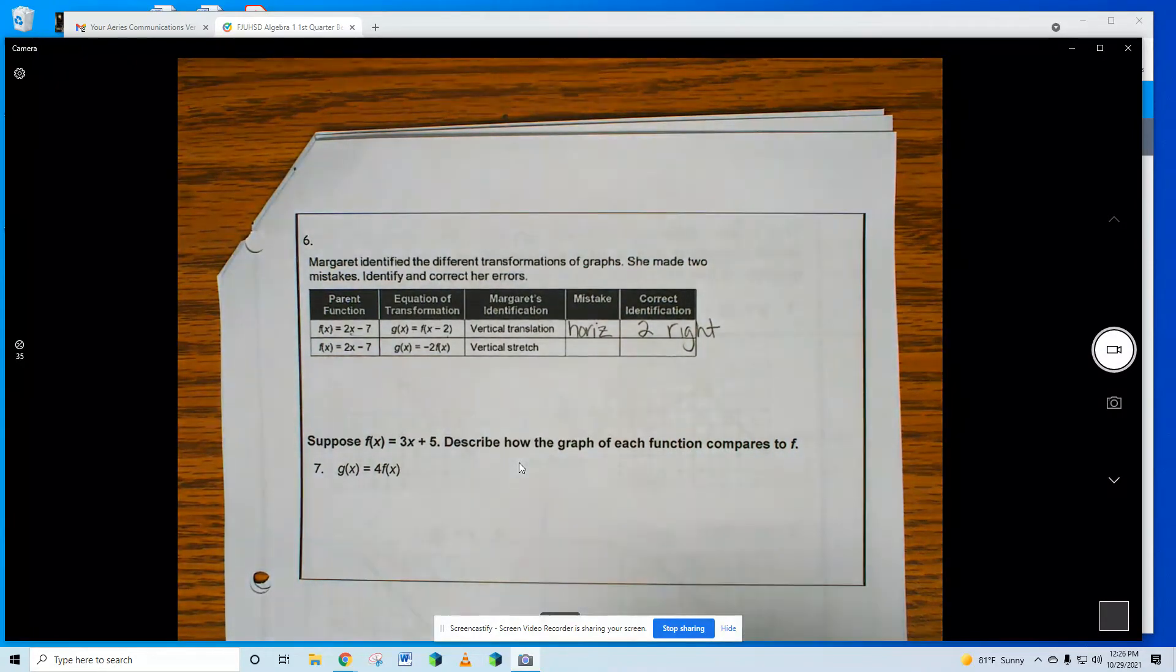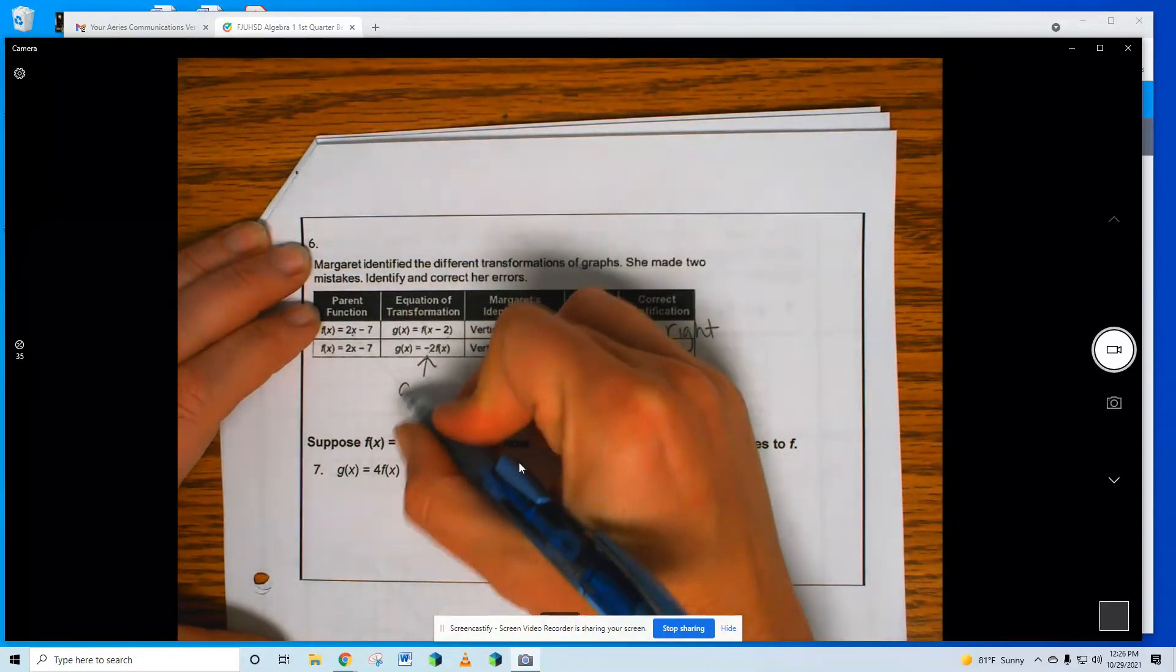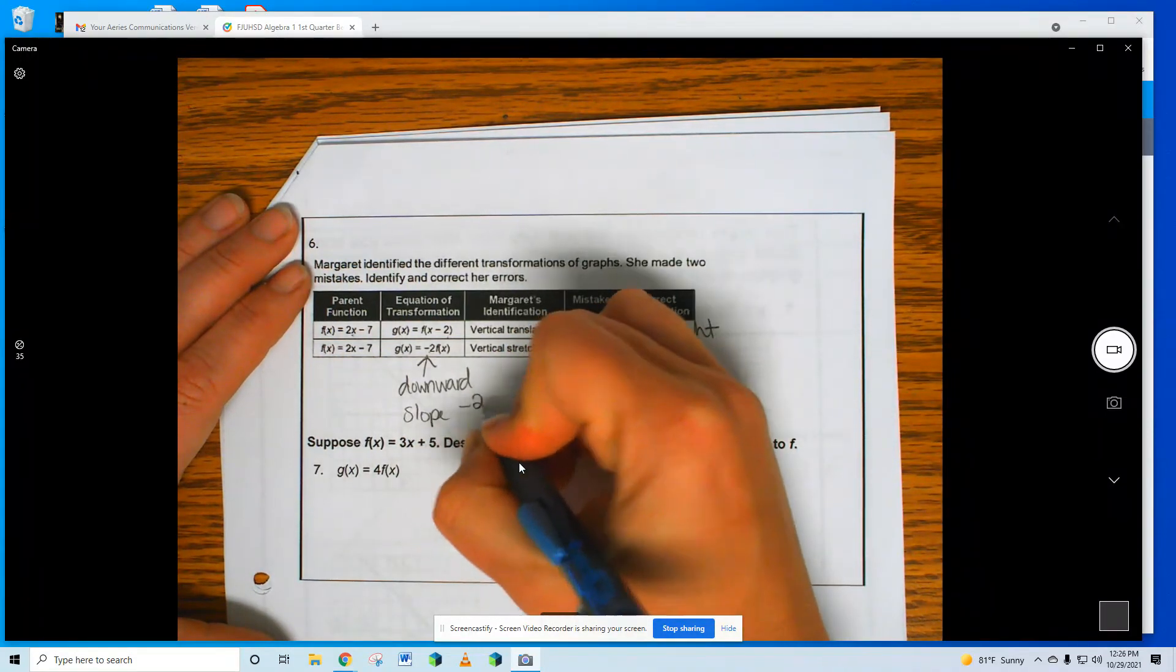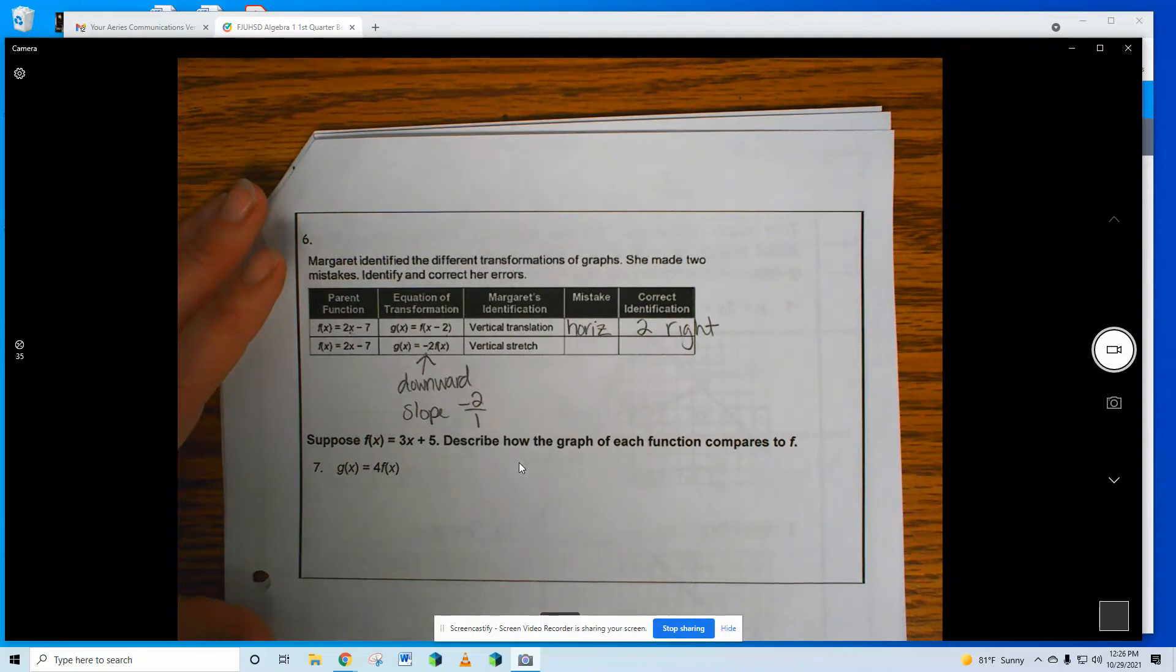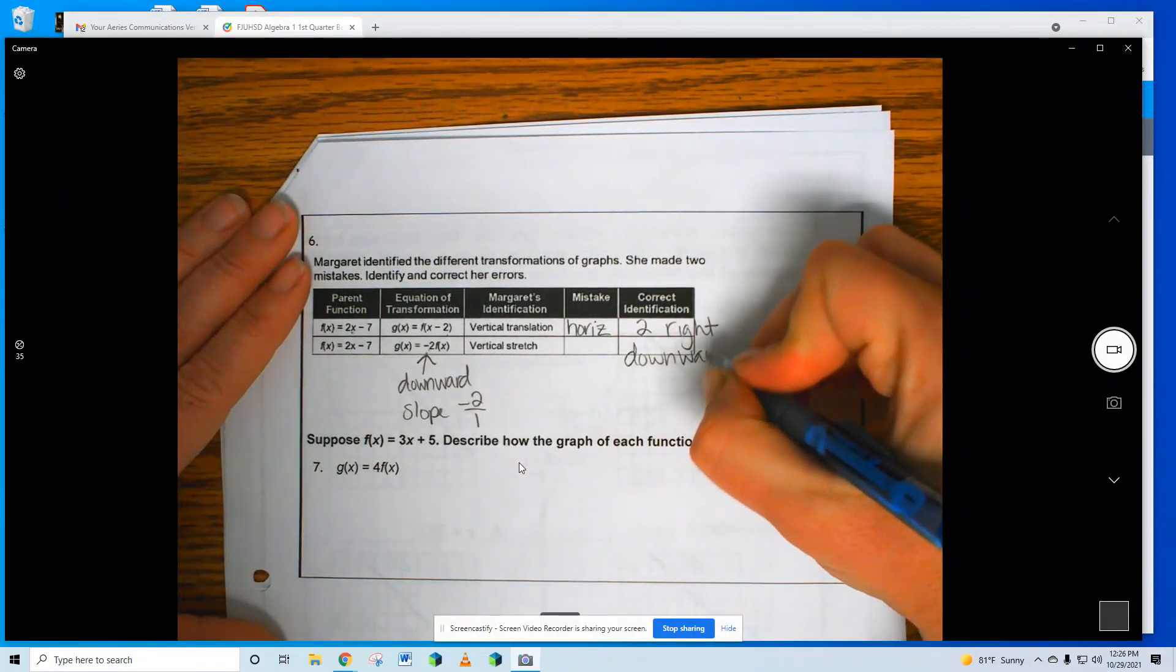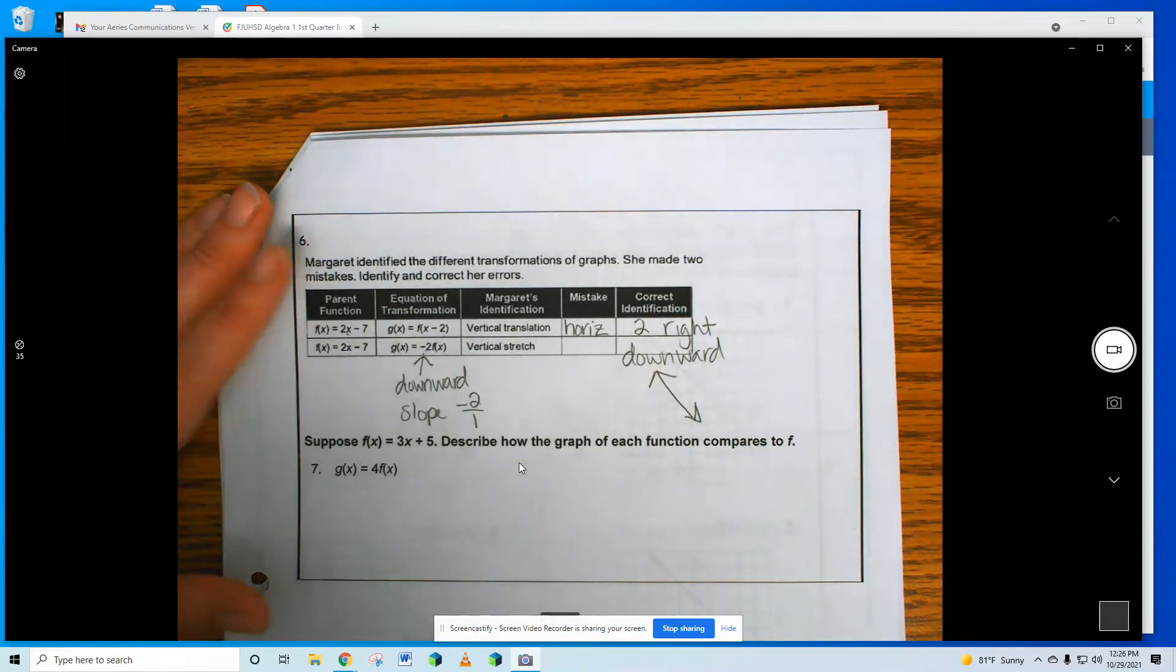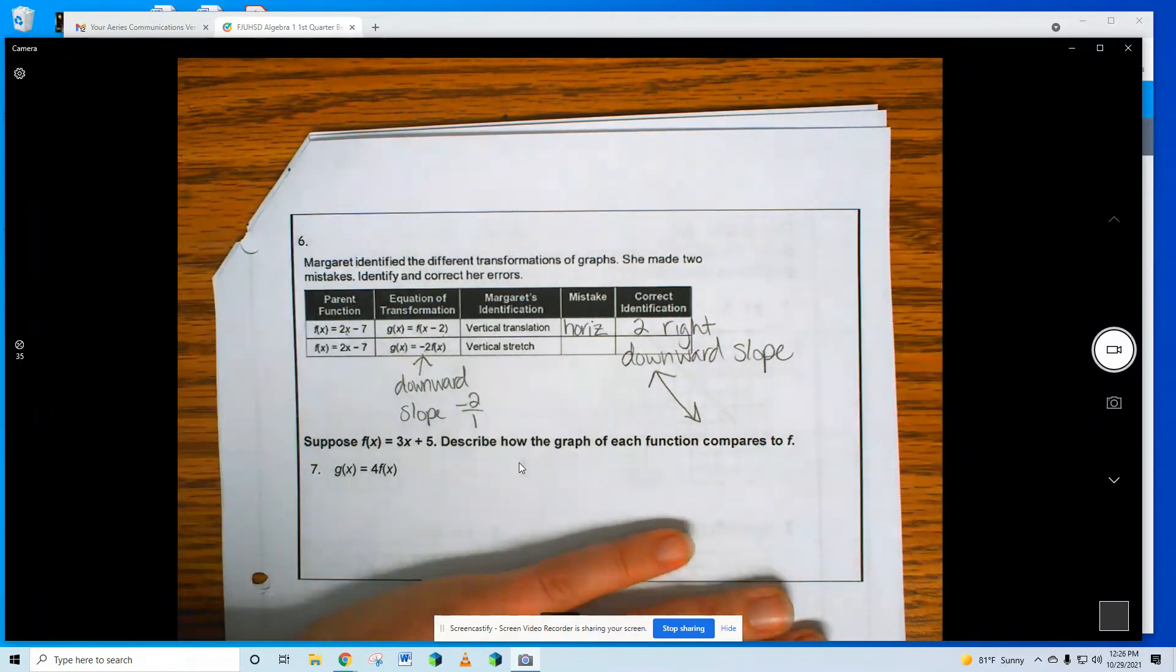And then she had a 2, a negative 2. Ooh, what's negative? Downward facing, we haven't talked about that yet. The slope is negative 2 over 1. And this is a stretch. So the problem is that it's downward facing. The line would be going like this. A stretch though would be a 2, so she's right in that regard. But she didn't mention about the downward slope. Downward slope.